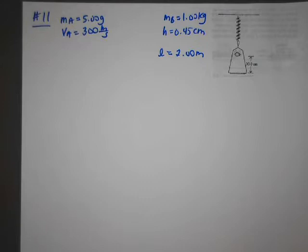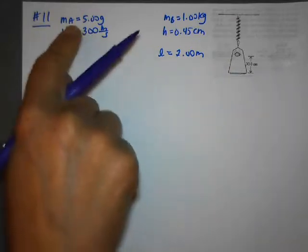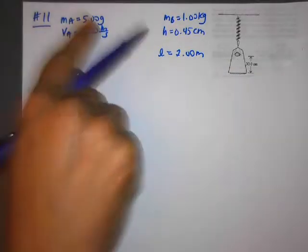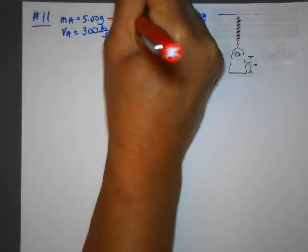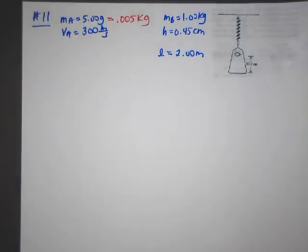All right, we're going to look at another conservation of momentum problem, and this again is a classic physics problem. So it says a five gram bullet is shot through a one kilogram wood block. So I'm going to call MA the bullet, which again I want to convert to kilograms right away so I don't forget, 0.005 kilograms. And it just shows you the bullet has a small mass as compared to the block.